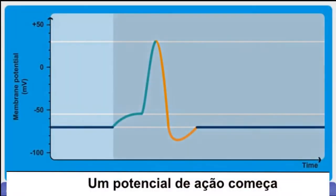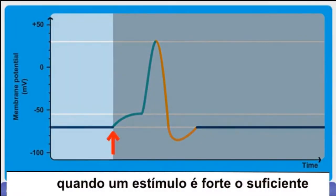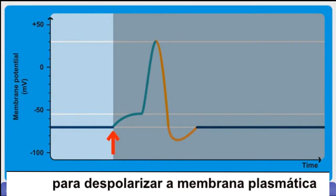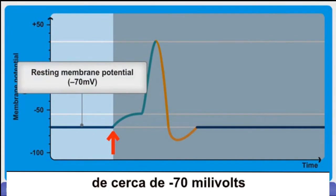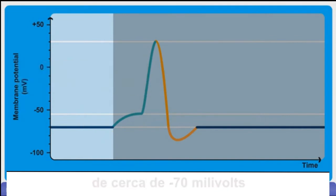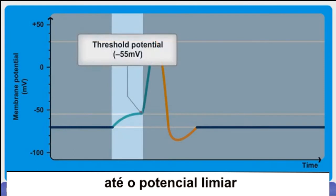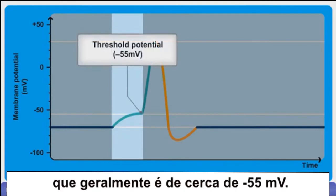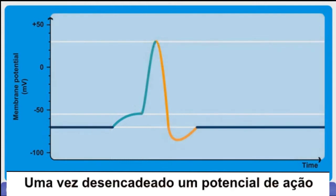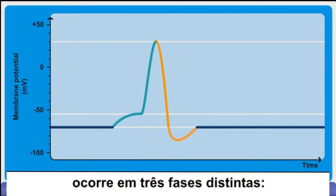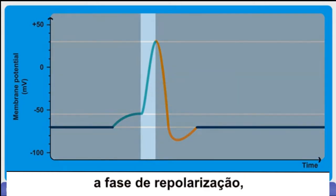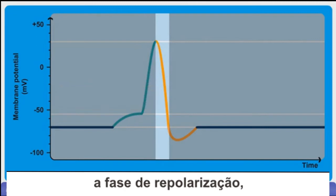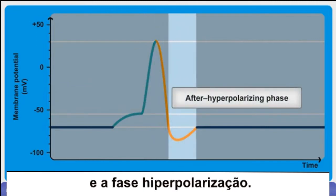An action potential begins when a stimulus is strong enough to depolarize the plasma membrane of a neuron from a resting membrane potential of about minus 70 millivolts to its threshold potential, which is usually about minus 55 millivolts. Once triggered, an action potential occurs in three distinct phases: the depolarizing phase, the repolarizing phase, and the after hyperpolarizing phase.